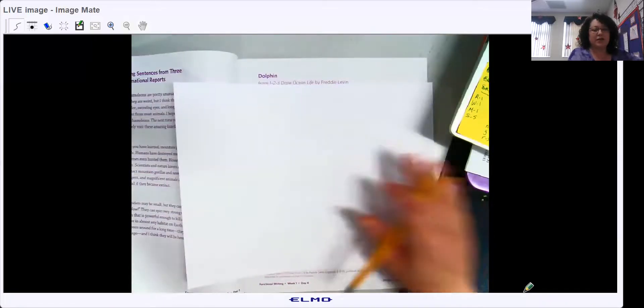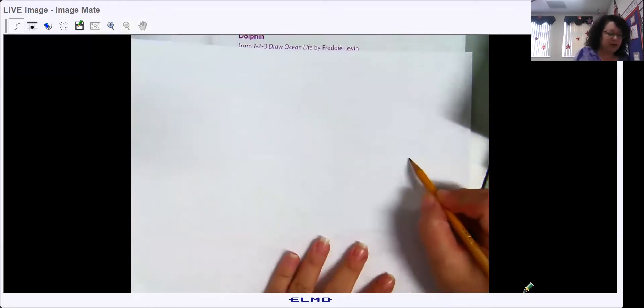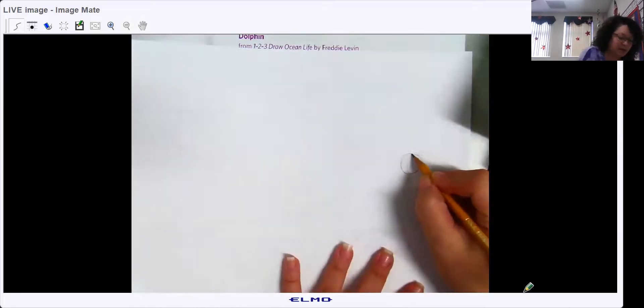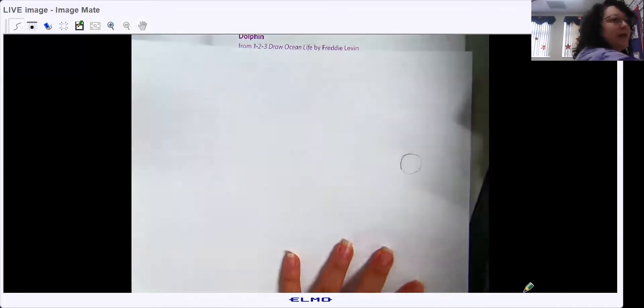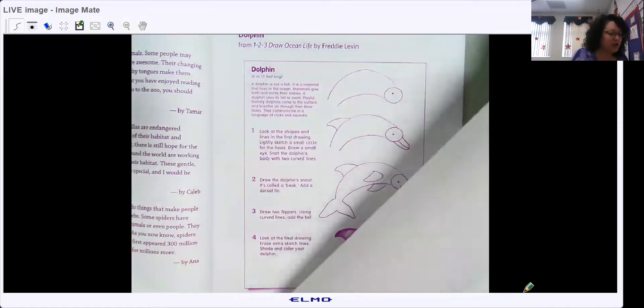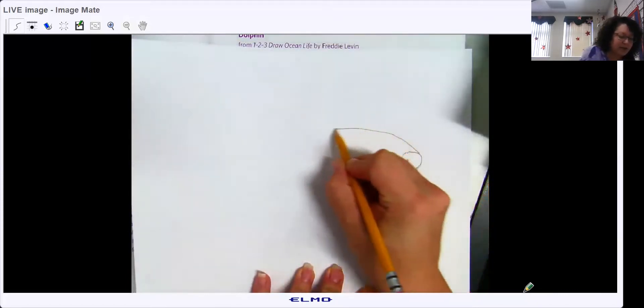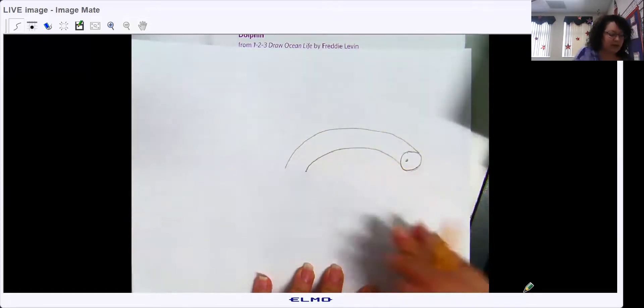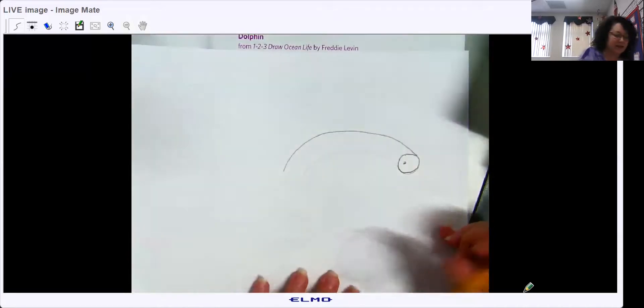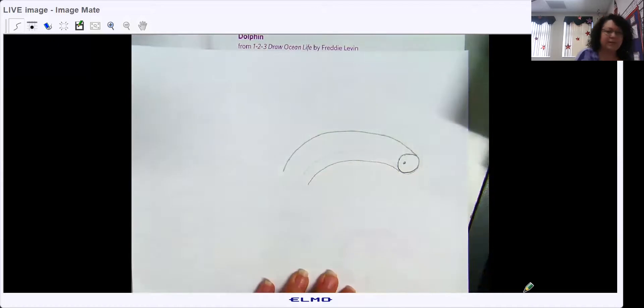So I'm going to draw a circle sort of in the middle of my paper. Not the middle here, the middle on the right side. I know all the zooming in and out. All right, here we go. Circle. I'm going to push hard so you can see. Hey, my pencil. I have another one right here. Circle. Dot for the eye and then two curved lines that come off. So you do that now.